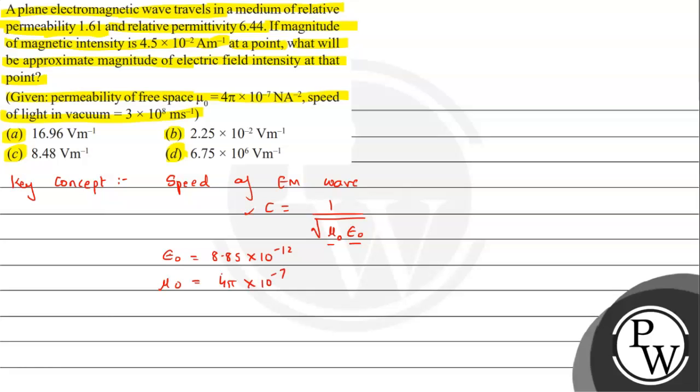If we substitute these values, the c value we get is approximately 3 × 10⁸ meter per second.